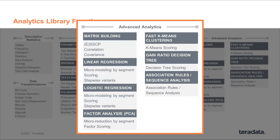In the advanced analytics category, from the classic multivariate statistical algorithms, we have linear and logistic regression as well as factor analysis. All of those are based upon being able to build a correlation or covariance matrix directly in the database at scale. Linear regression and logistic regression also have their stepwise variants — forward and backwards — as well as scoring algorithms. A nice new feature is micromodeling by segment: you can add a group by to your algorithm and simultaneously build many models, one for each segment. Factor analysis has that same feature. We also have k-means clustering and its scoring algorithm, gain ratio decision trees and its scoring algorithm, and association rules or sequence analysis for market basket type of analysis.